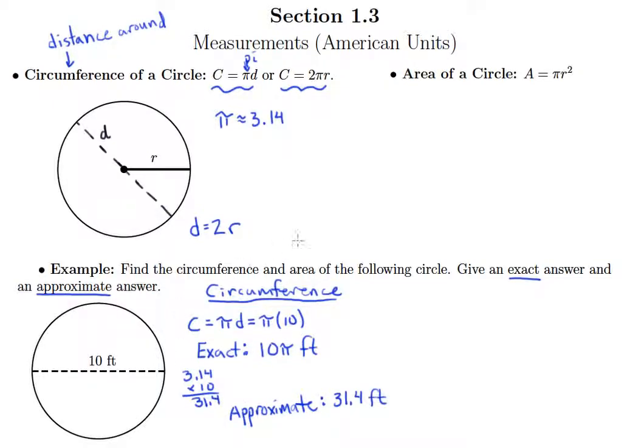This all stems from the fact that pi is not exactly equal to 3.14. So this symbol pi is the exact version of what that number is, and 3.14 is the approximate version.